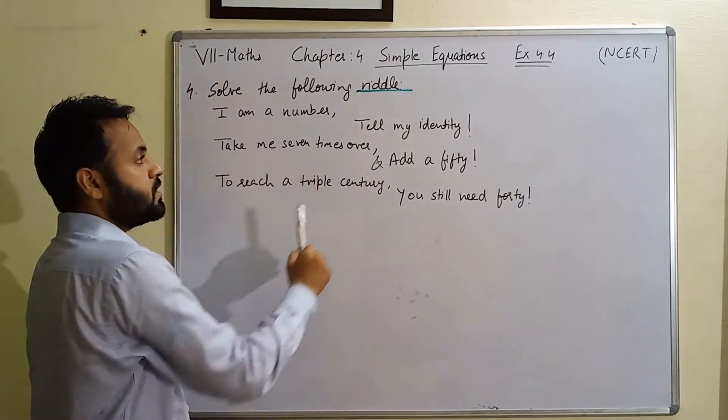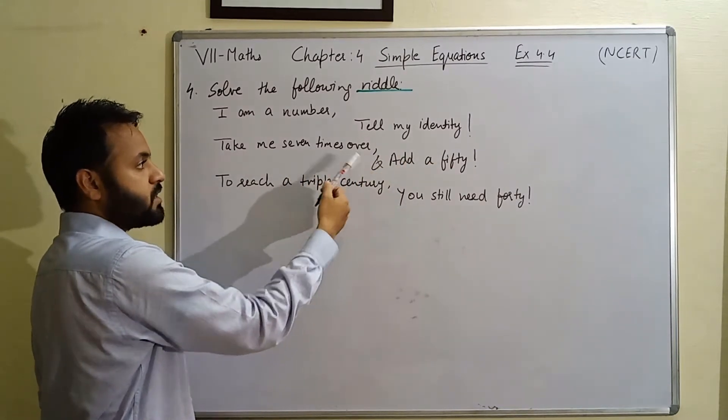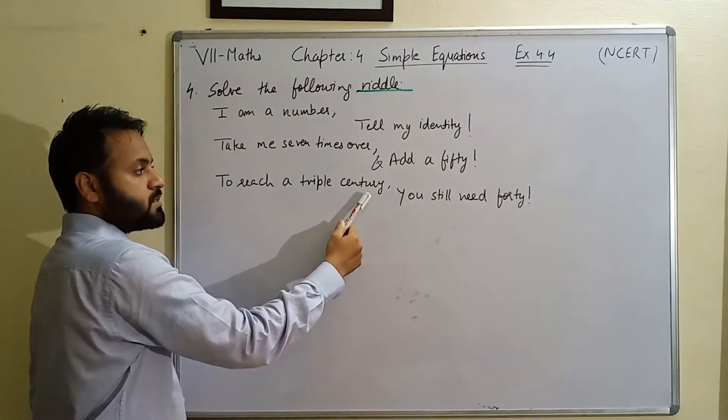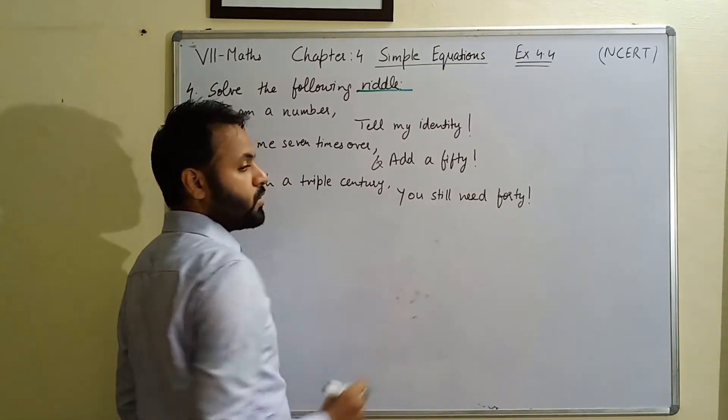I am a number. Tell my identity. Take me seven times over and add 50. To reach a triple century, you still need 40.